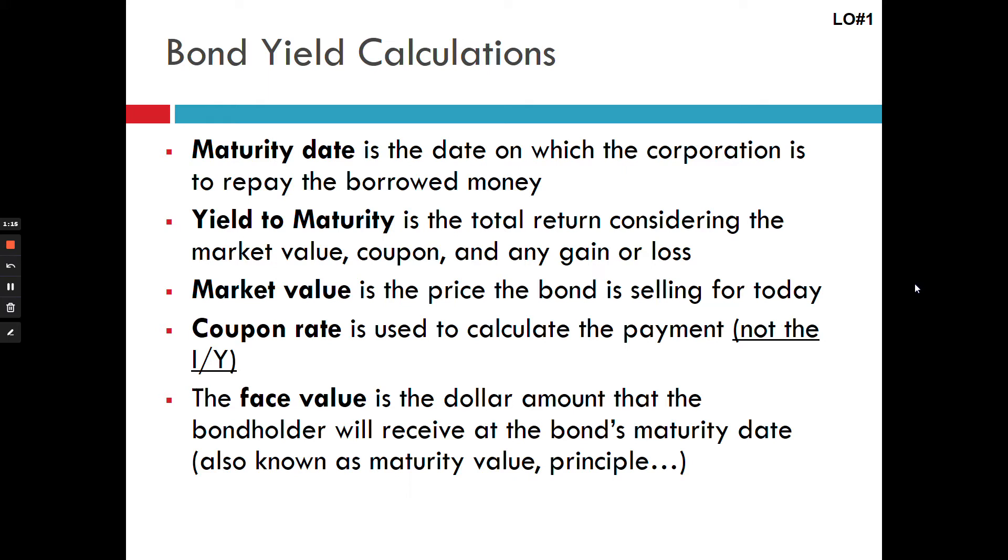So that's going to impact your maturity date, your yield to maturity, and your coupon or your payment. So maturity date is just your N.